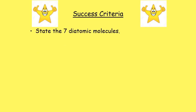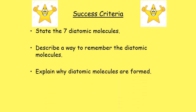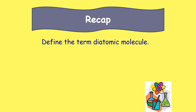Hopefully you've learned to state the seven diatomic molecules and have a way to remember them — 'seven and hydrogen' or 'H and off and down'. You should also be able to explain why diatomic molecules are formed: the atoms want a full outer shell of eight electrons and achieve this by sharing electrons. Hydrogen shares one electron each, nitrogen three, oxygen two, and all halogens — fluorine, chlorine, bromine, and iodine — share one electron each.